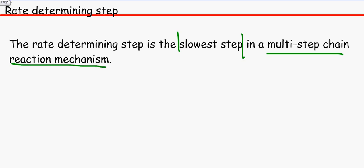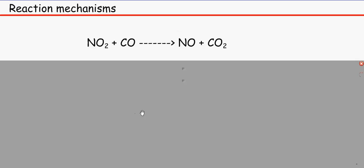So, imagine that we've got NO2 plus CO to make NO plus CO2. We've got the stoichiometric equation here. Can we use that to find the rate? No. Can we use this to find the order of NO2 or CO? No.